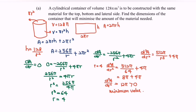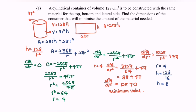Referring back to the question: the minimum occurs at r = 4. Substituting r = 4 into h = 128/r² gives h = 128/16, so h = 8. Finally, the minimum area is A = 256π/4 + 2π(16) = 64π + 32π = 96π square meters.